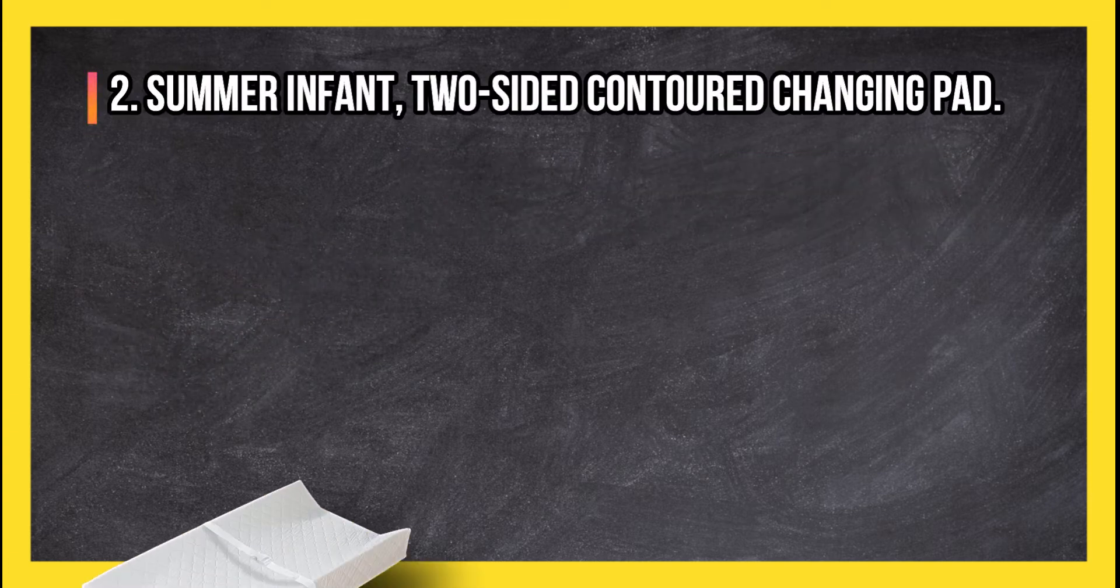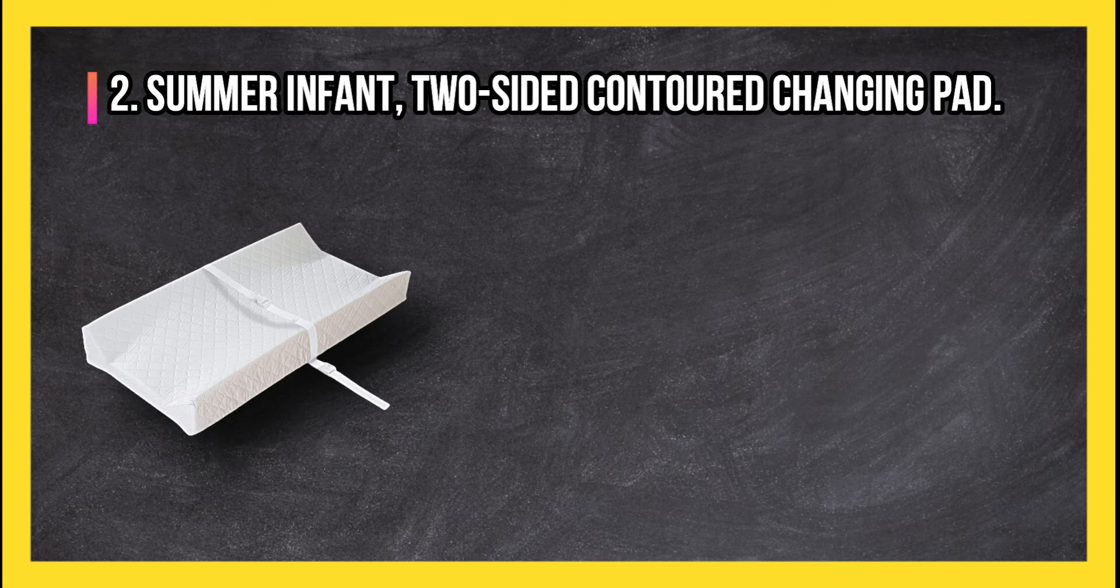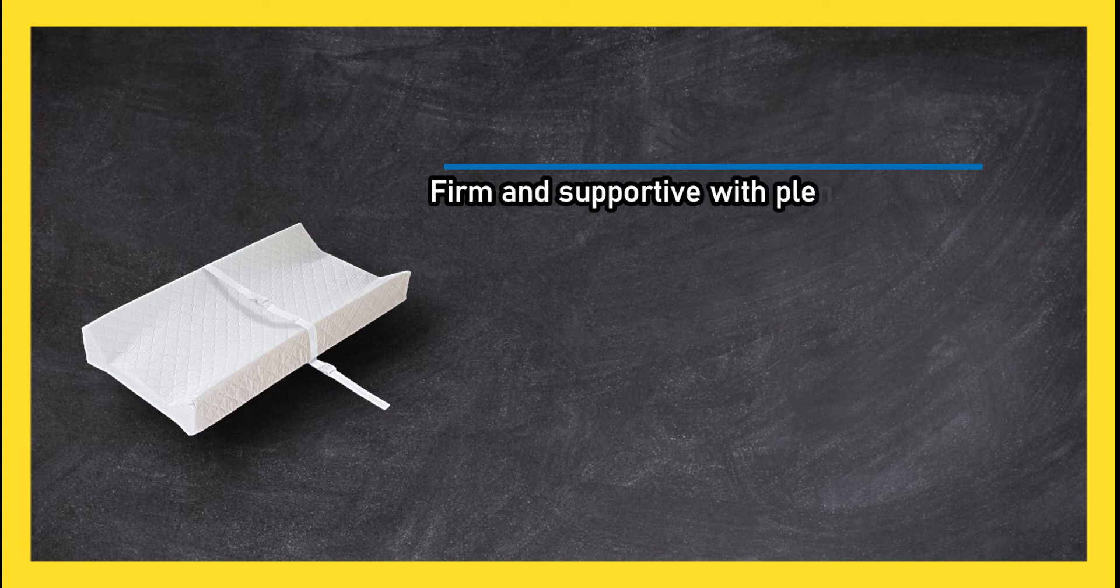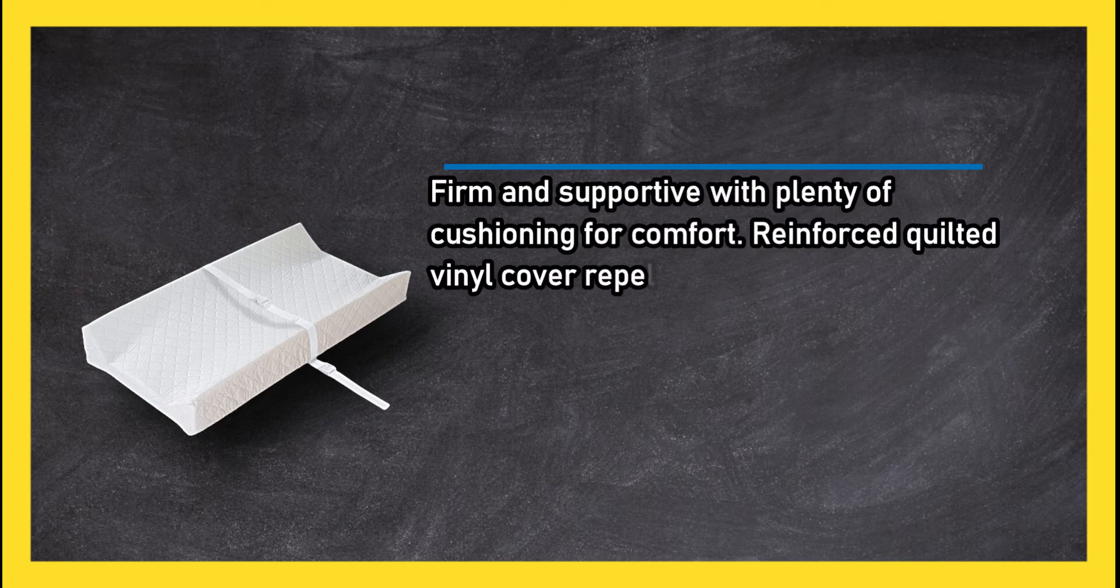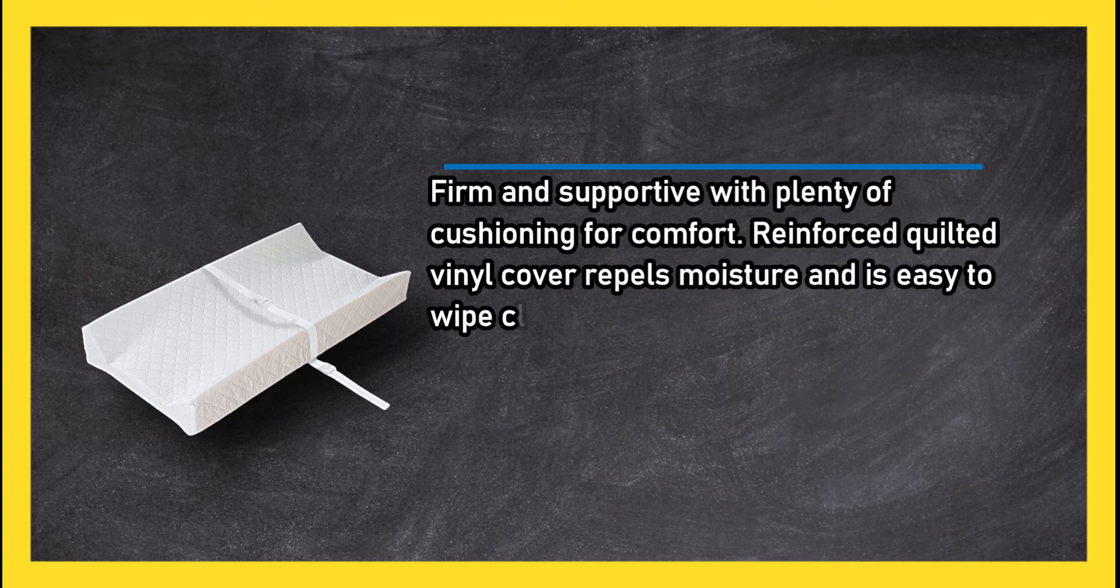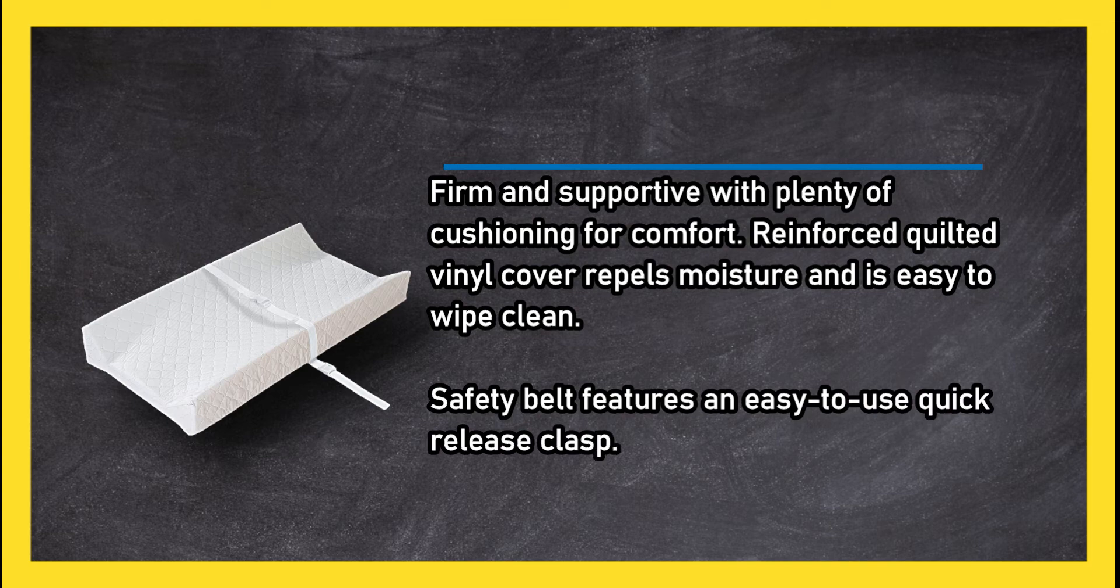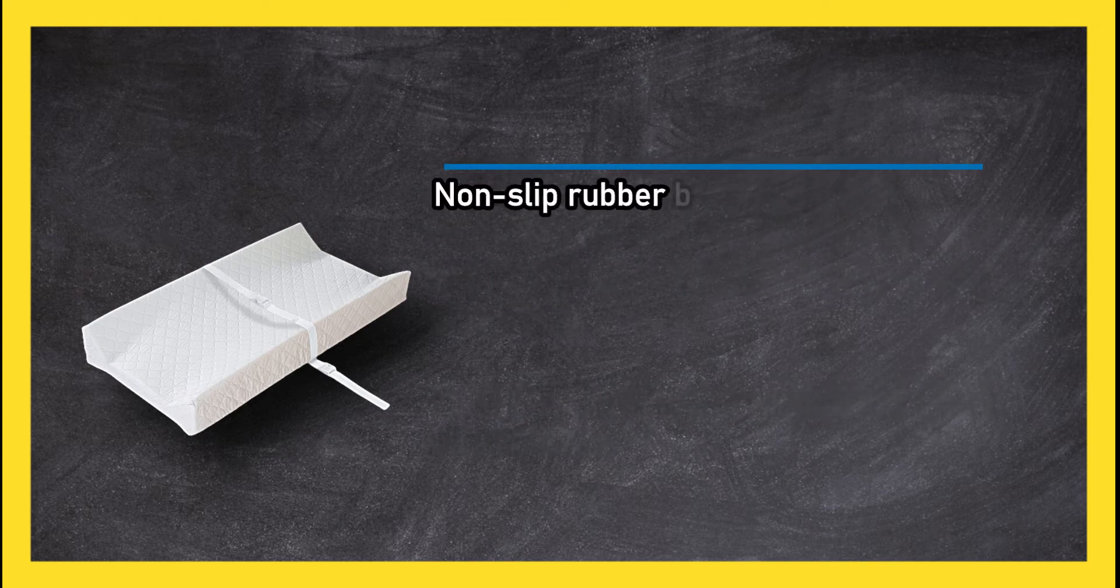At number two: Summer Infant two-sided contour changing pad. Firm and supportive with plenty of cushioning for comfort. Reinforced quilted vinyl cover repels moisture and is easy to wipe clean. Safety belt features an easy-to-use quick release clasp. Non-slip rubber base helps to prevent shifting.